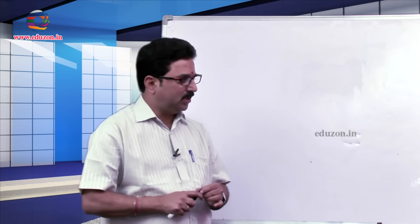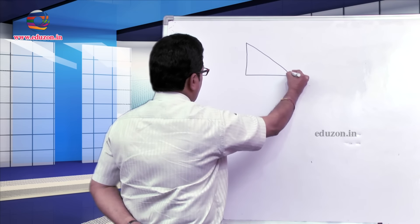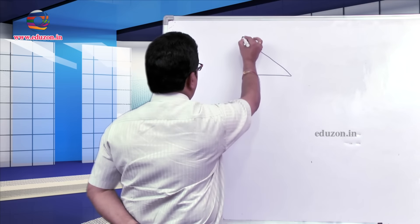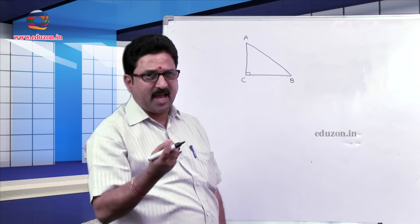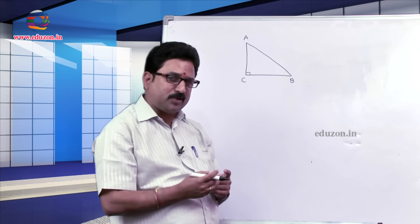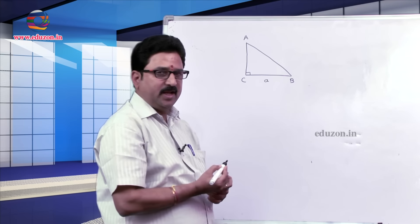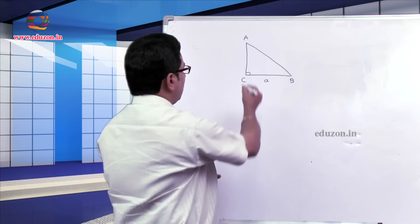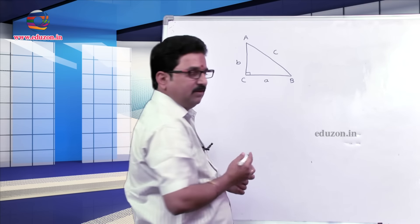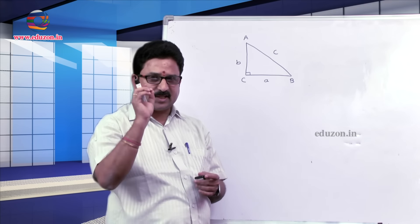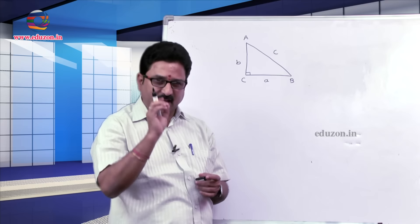Today let us have one problem: consider a right angle triangle. A right angle triangle usually has one right angle and a longest side. In triangle ABC, angle C is equal to 90 degrees and the longest side opposite to this right angle is AB, the hypotenuse. BC is represented by small letter a, AC is represented by small b, and AB is represented by small c. You have to follow the notations here very carefully. Let small a, small b, small c represent the lengths of the sides in right angle triangle ABC respectively.